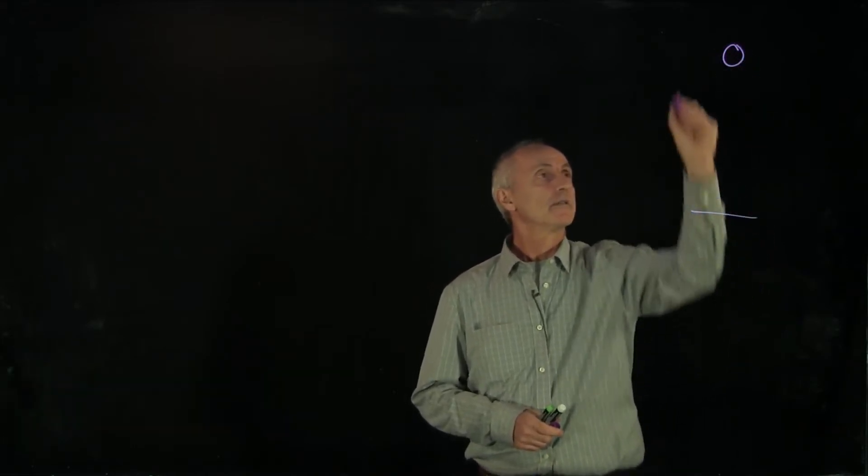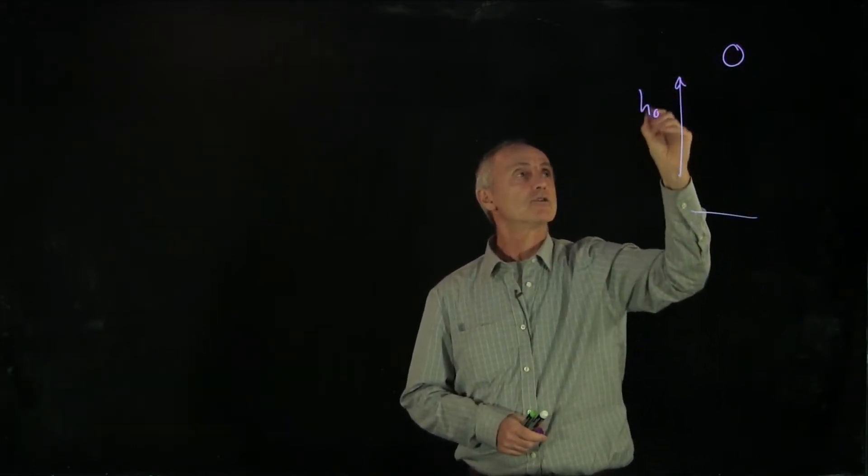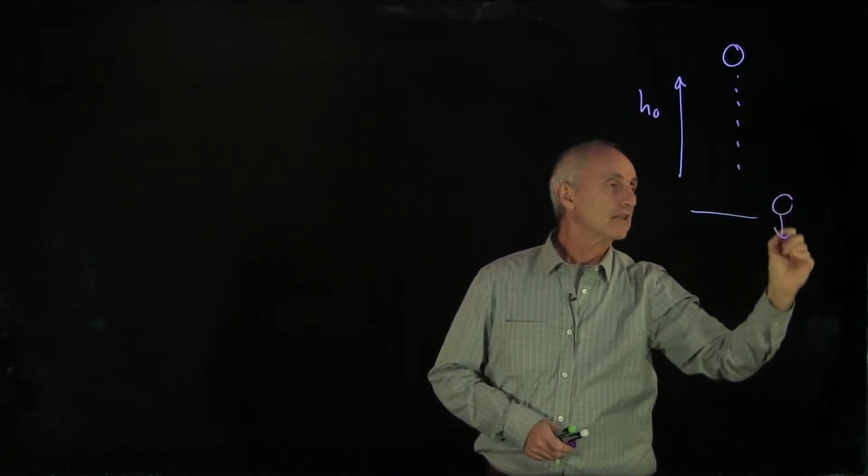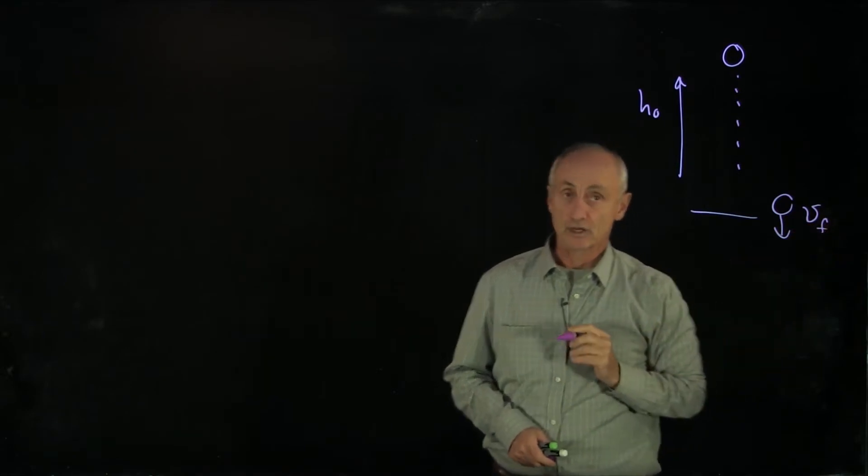When we used our energy principle, suppose we have an object that starts at a height h0. This object is dropped, and when it gets to the ground, it has some final velocity.